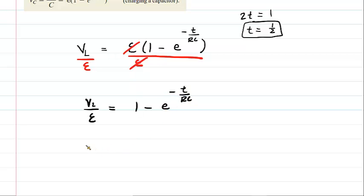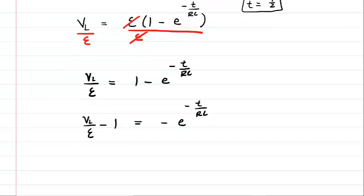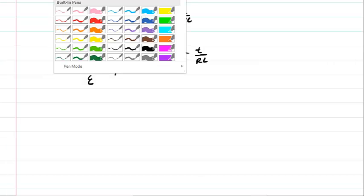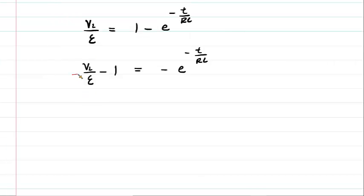We can subtract one from both sides. So then we would have this fraction minus one equals negative e to this negative T over RC. We could then divide each term by negative one. So when you divide each term by negative one, this will become negative, this will become positive, and this will also become positive. We might be better off flipping the left side at this point. We can call it one minus VL over EMF. It wouldn't have to do that, but it looks a little prettier.